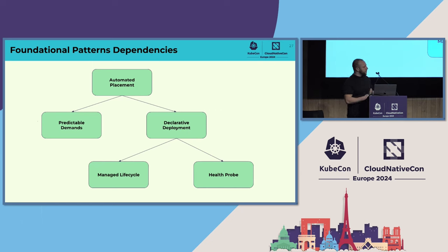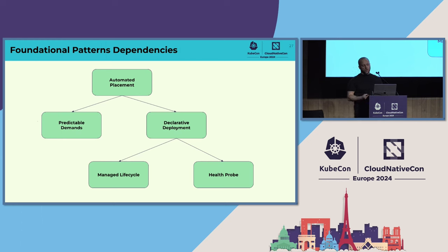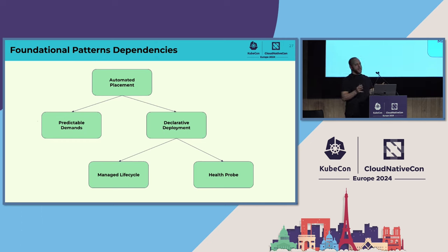These foundational patterns are interrelated, and you need to implement them together for your application to work properly on Kubernetes. For example, for automatic placement to work, you want to declare what resources your application needs — that's predictable demand. You also want to declare how the application should replace old versions with new ones — that's declarative deployment. And for declarative deployment to work, you want the application to listen to Kubernetes events — that's managed lifecycle — plus the health probe we just covered.